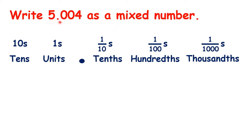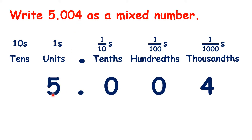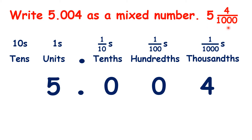What is 5.004 as a mixed number? We have 5 units, or 5 wholes, then we don't have any tenths, we don't have any hundredths, and we have 4 thousandths, so we have 5 and 4 thousandths.